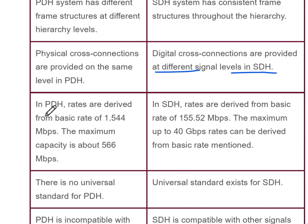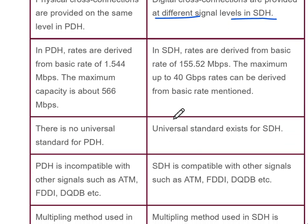In PDH, the basic data rate is 1.5 Mbps and the maximum is 565 Mbps. In SDH, the basic data rate is 155.5 Mbps and maximum is up to 40 Gbps.